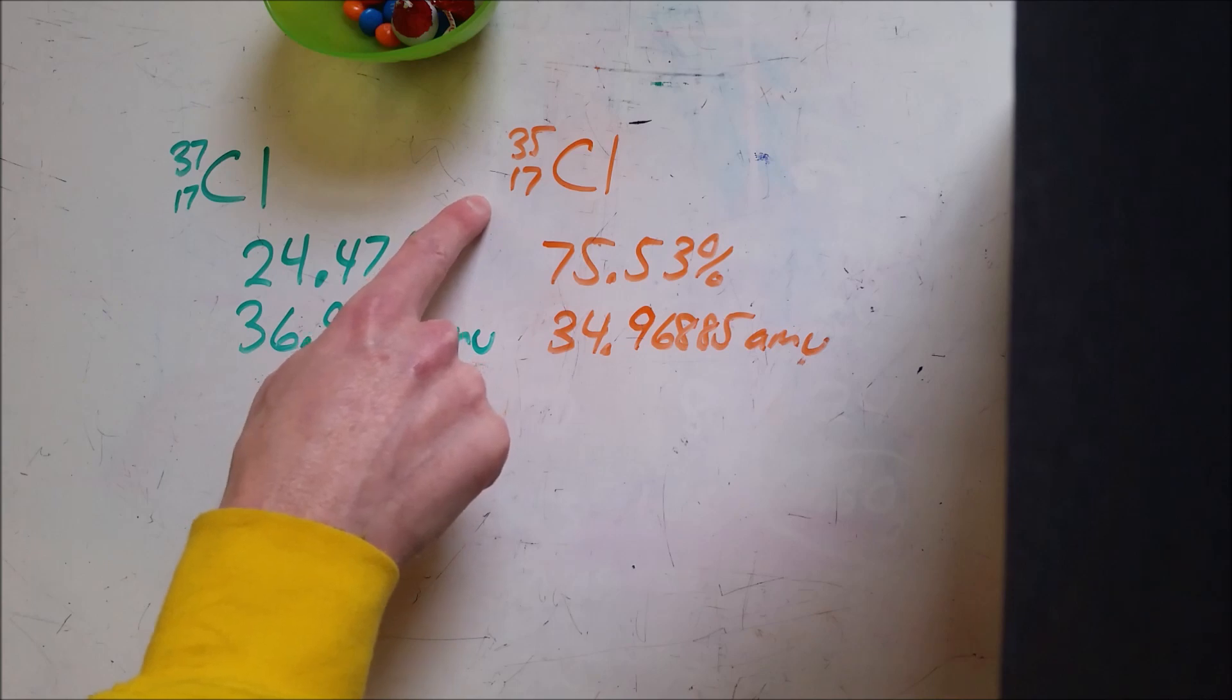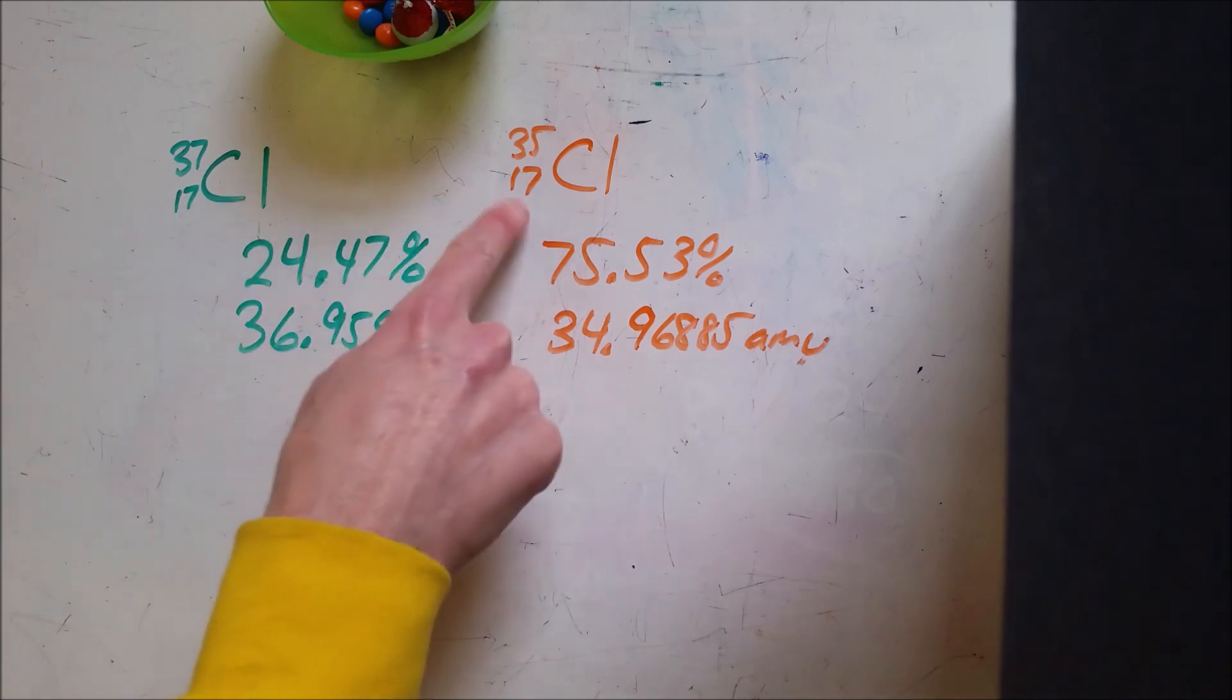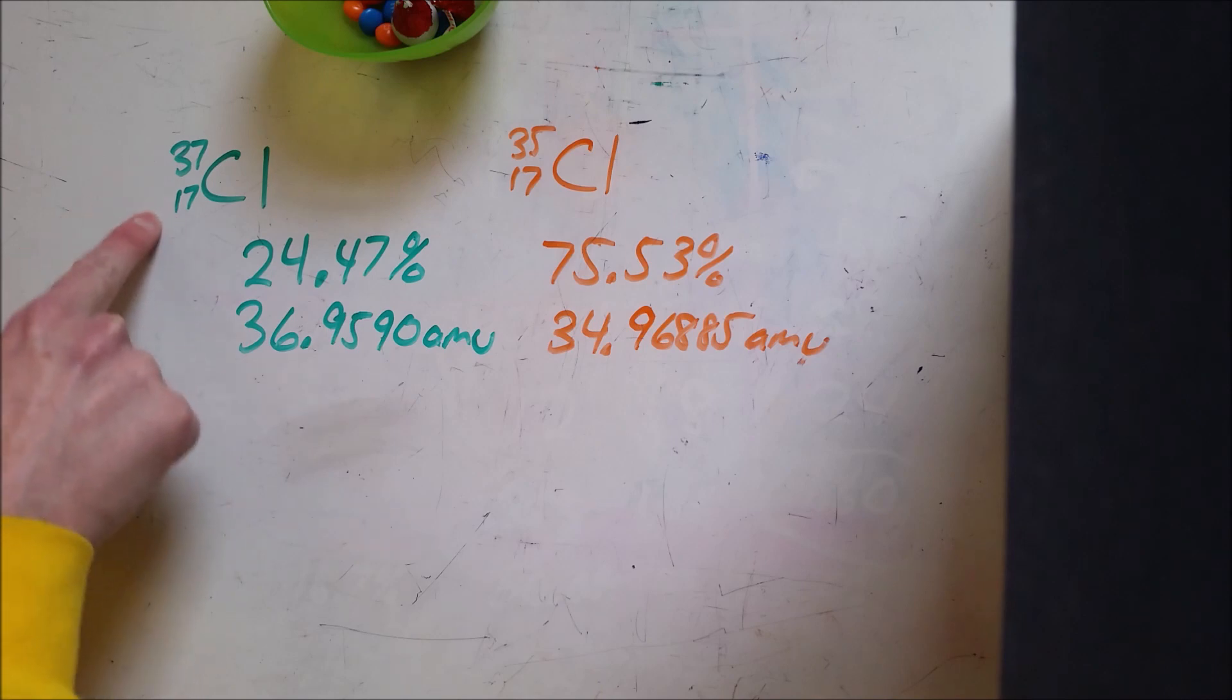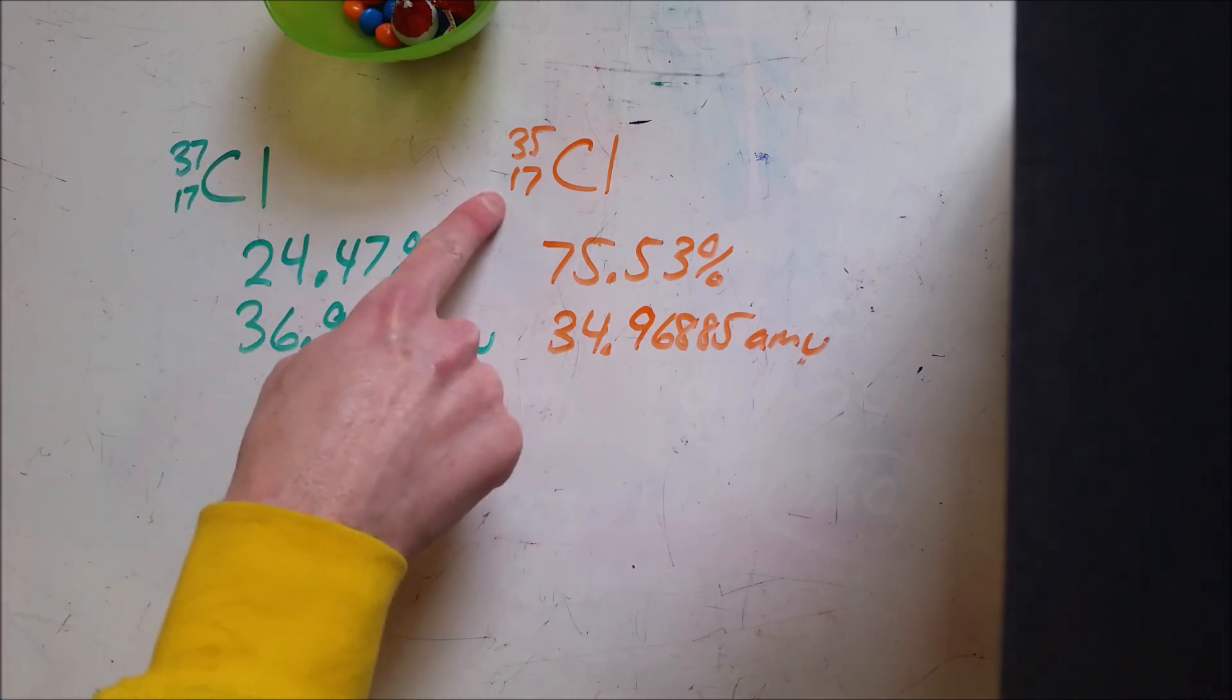So chlorine has two common isotopes: Chlorine-37 and Chlorine-35. In Chlorine-37 we have 17 protons and 20 neutrons. And in Chlorine-35 we have 17 protons and 18 neutrons.